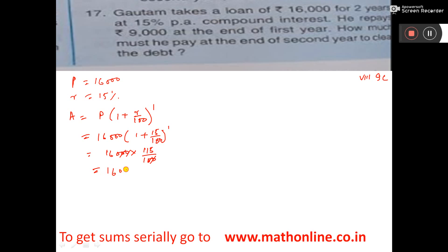115 by 100, zeros will cut, so 160 into 115. That is the amount, so this is the amount after first year.